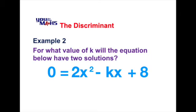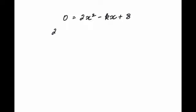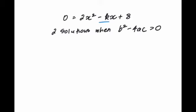In the next example, we're told the equation has two solutions, but the coefficient of x is an unknown expressed as negative k. We need to use the fact that two solutions means the discriminant is greater than zero. So we set up b squared minus 4ac greater than 0, where the b value is negative k, a is 2, and c is 8.